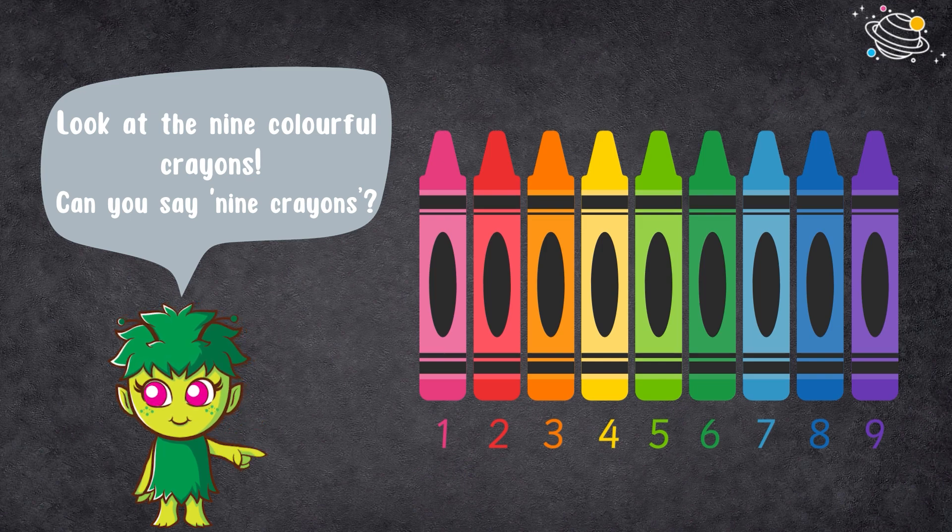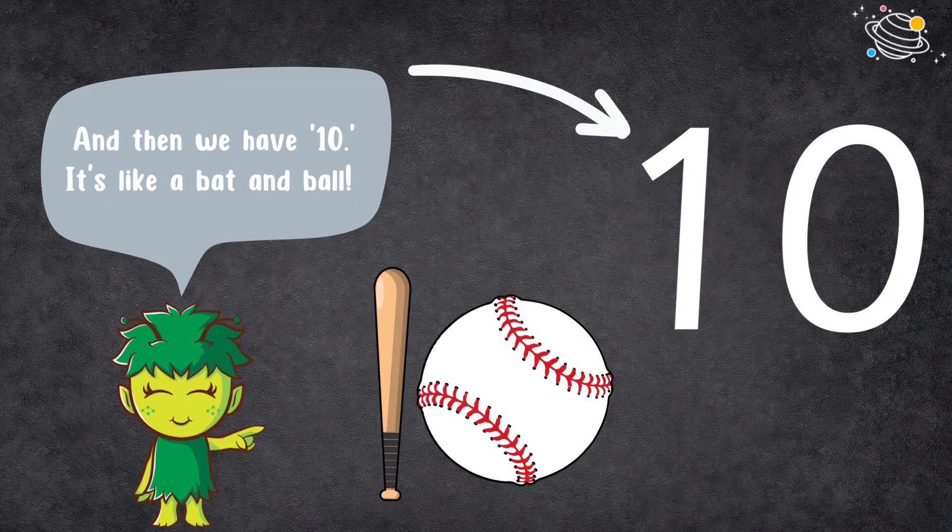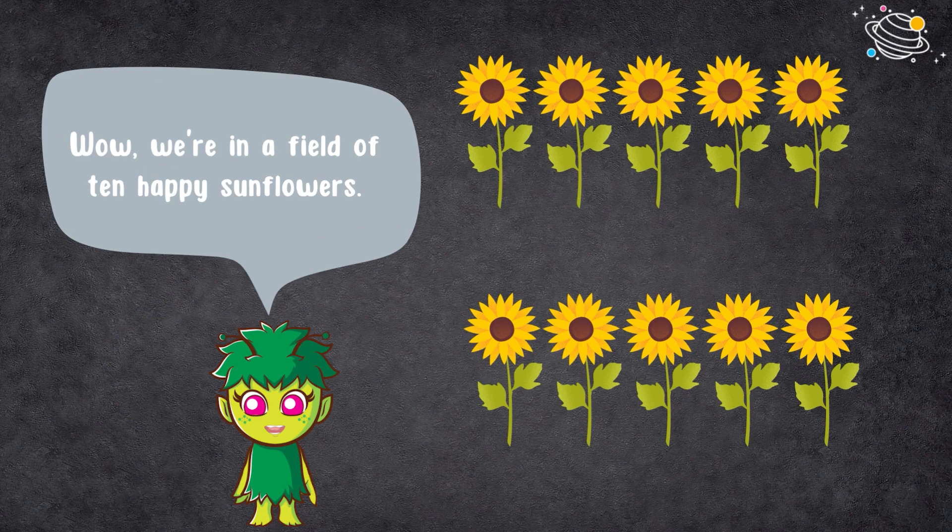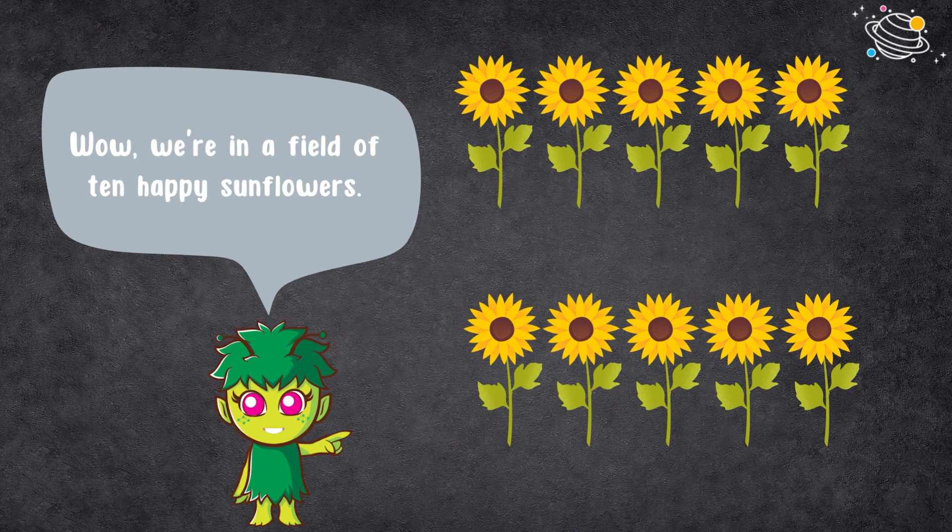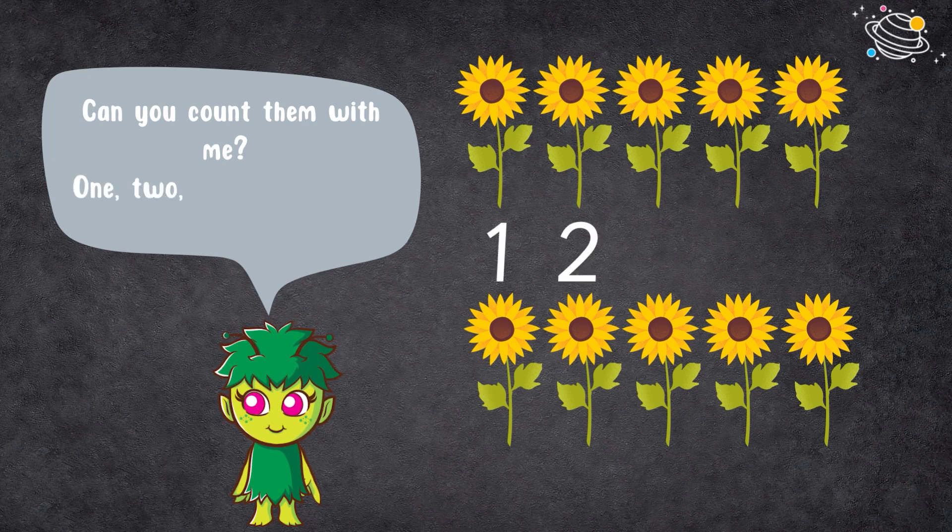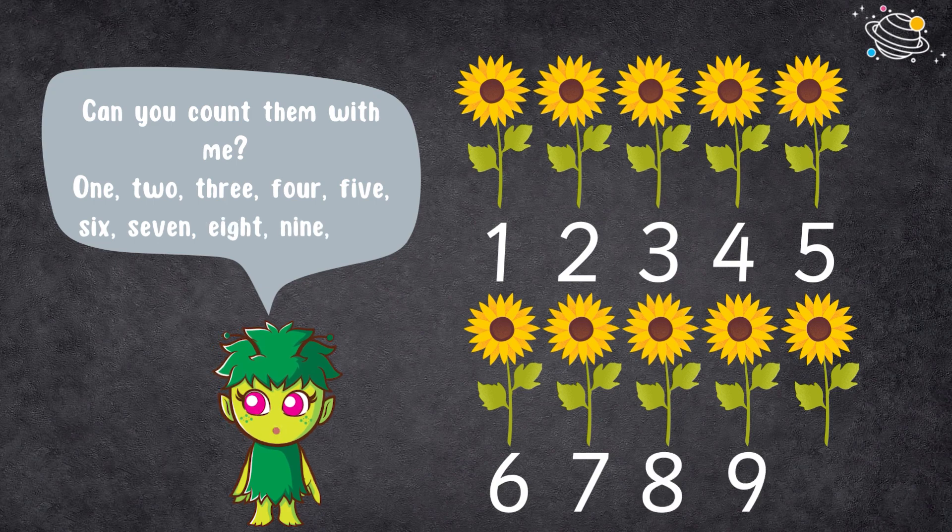colorful crayons. Can you say nine crayons? And then we have ten. It's like a bat and ball. Say ten with me. Wow, we're in a field of ten happy sunflowers. Can you count them with me? One, two, three, four, five, six, seven, eight, nine, ten.